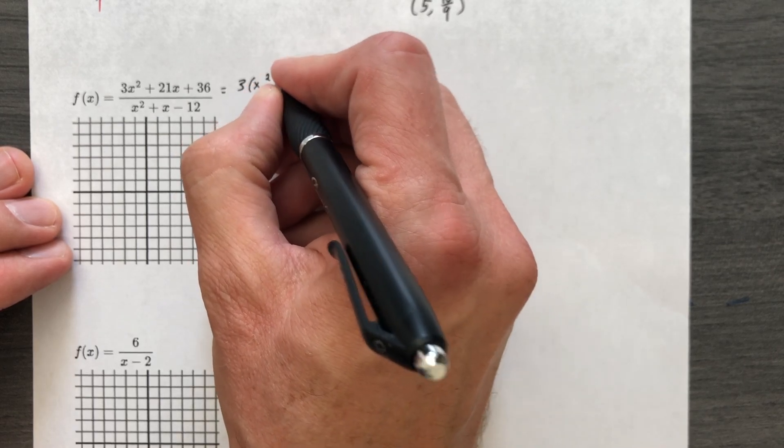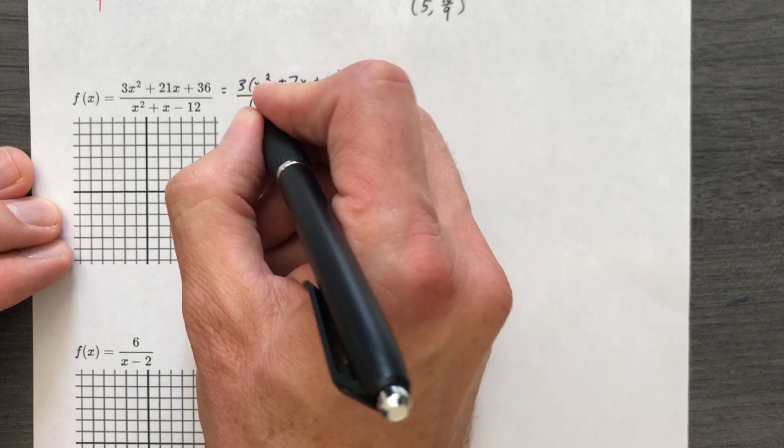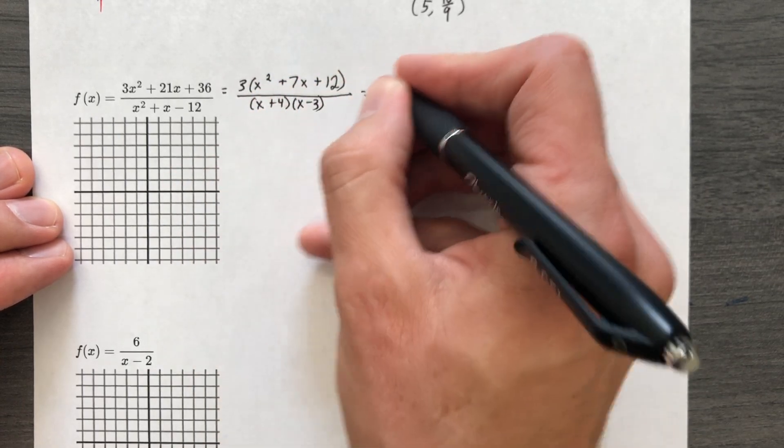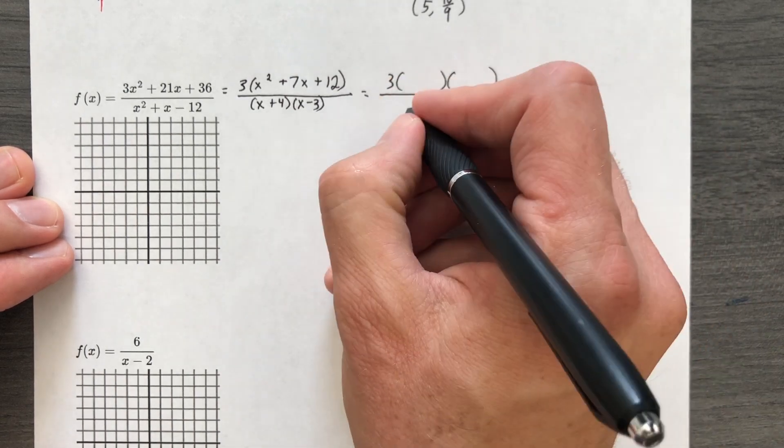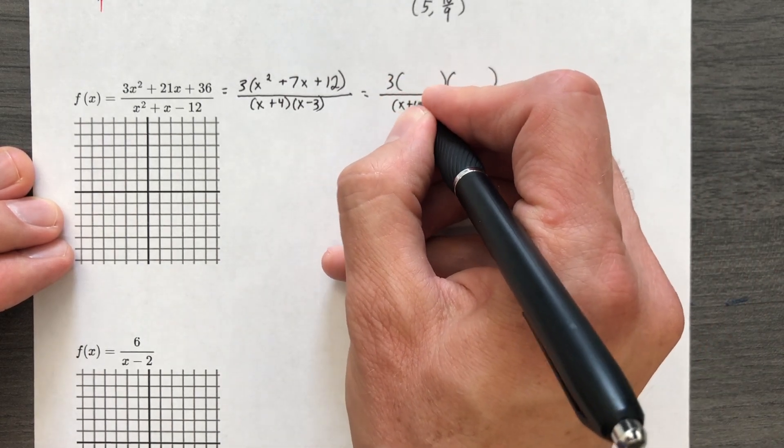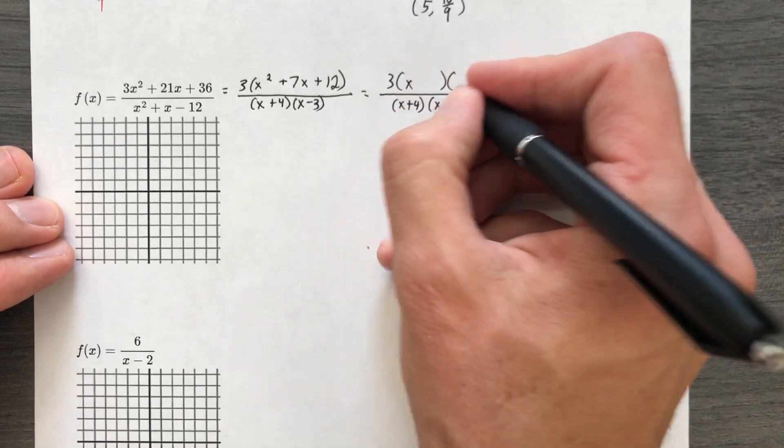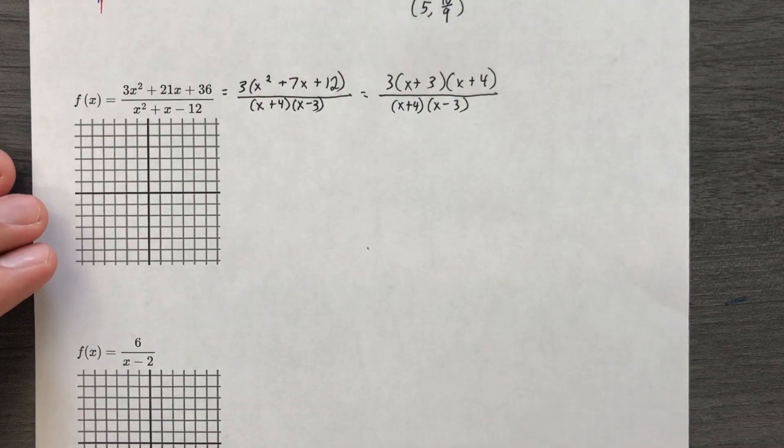Three, and then x squared plus 7x plus 12, and we're going to factor that denominator. So x plus 4, x minus 3, and then 3. Let's continue factoring that numerator. Hopefully something will cancel. Boy, I sure hope so. It'd be a tragedy if this one didn't have a hole in the graph. 3, 4. It does. It's magical.